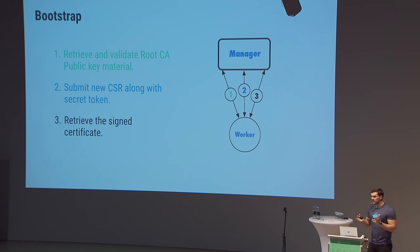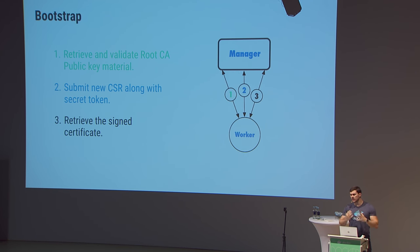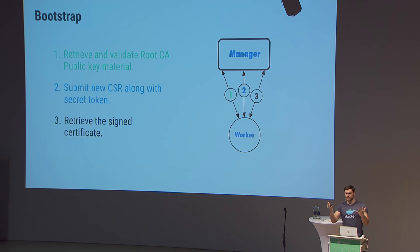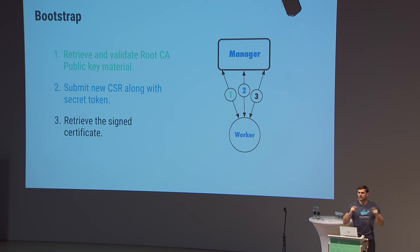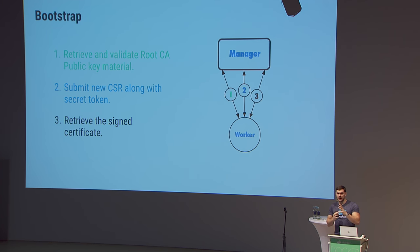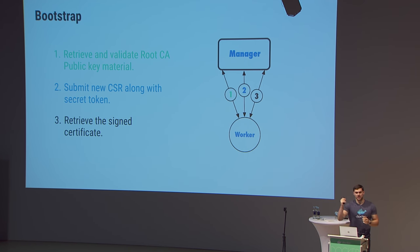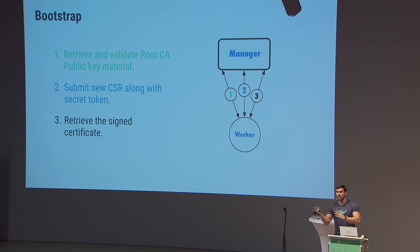The CSR dance happens in three steps: the worker downloads the root CA file, uses the token's cryptographic hash to verify it's legitimate, creates a TLS connection to a manager using that CA, submits a CSR containing only public information, and receives a signed certificate. It now has an identity for mutual TLS, can register a session, and participate in the cluster.